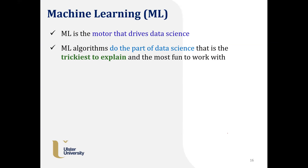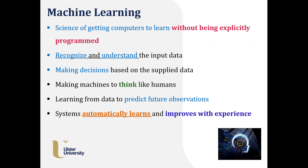Machine learning and artificial intelligence — how do they come into picture? ML is the motor that drives data science. ML algorithms do the part of data science that is trickiest to explain and most fun to work with. It's the science of getting computers to learn without being explicitly programmed. You don't program your code to do certain things; you learn from the data — like robots and driverless cars learning from user patterns.